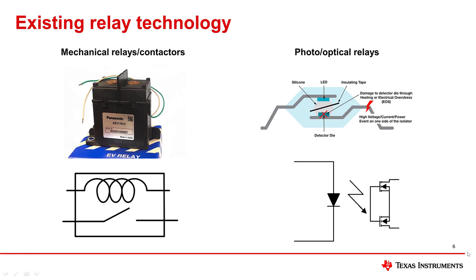Existing relay technologies include electromechanical relays and photorelays. A mechanical relay is an electrical switch that controls a load using a coil for isolation and metal plates for the electrical connection. Different power levels are available, including reed relays, power relays, and contactors. A photorelay is a solid-state relay that uses an LED emitter to send light energy to a photovoltaic receiver that converts photons to electricity. This voltage then powers and turns on another switch, such as a MOSFET.